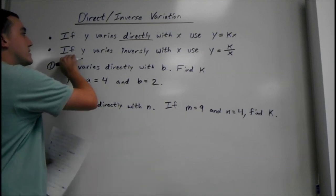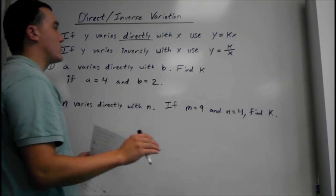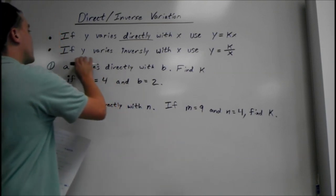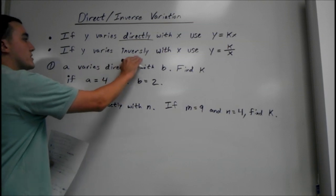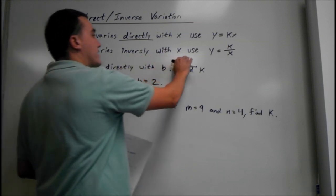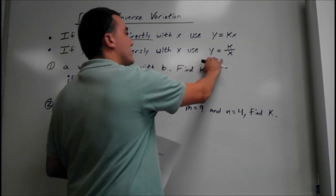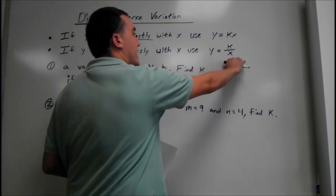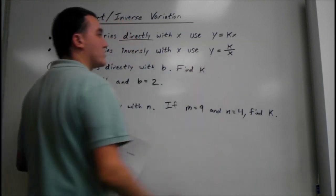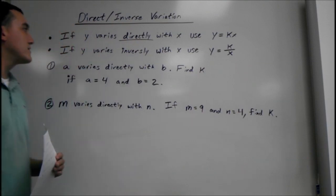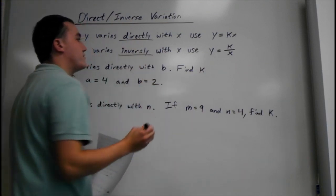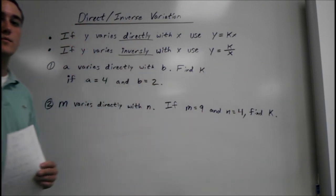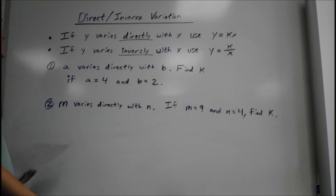The second one we're going to be learning about is inverse variation. If y varies inversely with x, we're going to use y equals k over x, or k divided by x. So when it says inversely, we're going to divide: k divided by x.